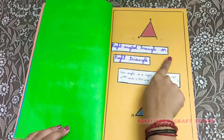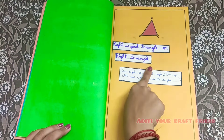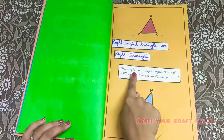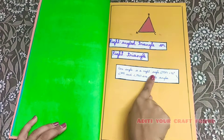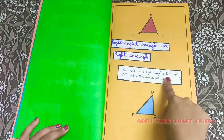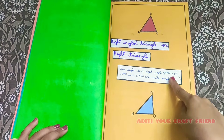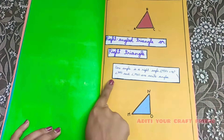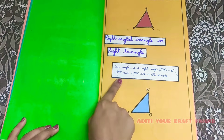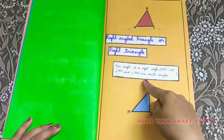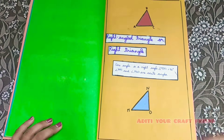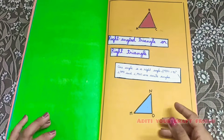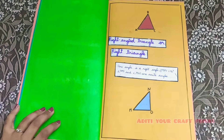Right angle triangle: angle MON is equal to 90 degrees. Angles NMO and MNO are acute angles. This is an example of a right angle triangle.